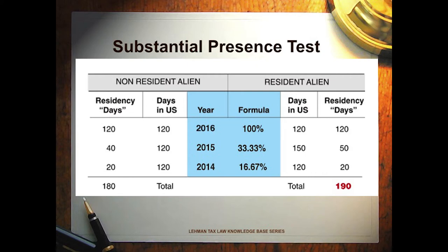The standard is we look at the year in question. For example, for a non-resident alien coming to the United States in 2016, we look at how many days they spent in 2016 — that counts as one full day each. Then we go back to 2015, look at how many days they spent there, and divide that by three. So one-third of every day spent in the U.S. in 2015 gets added to the 2016 total.